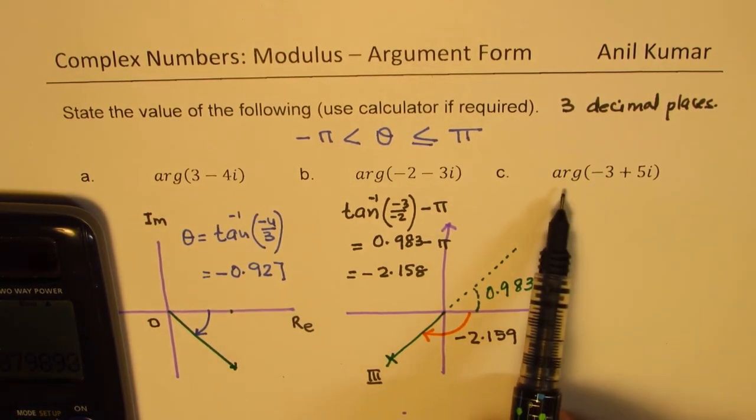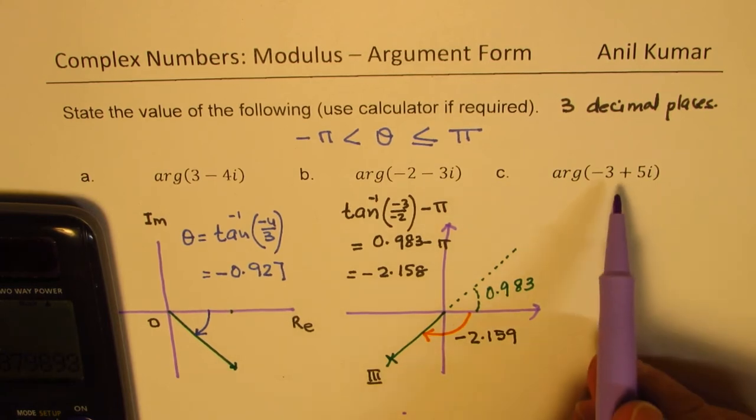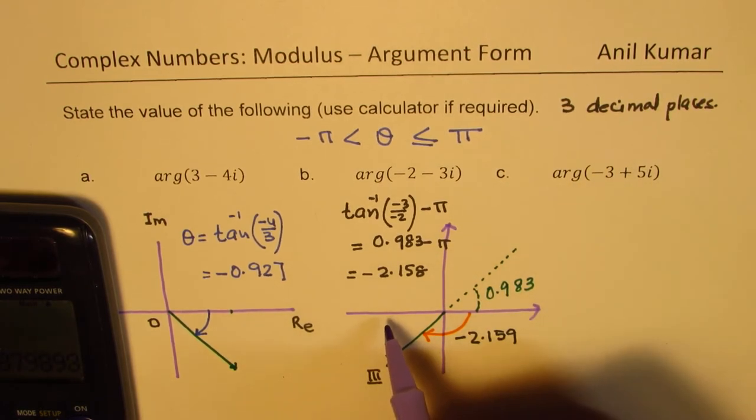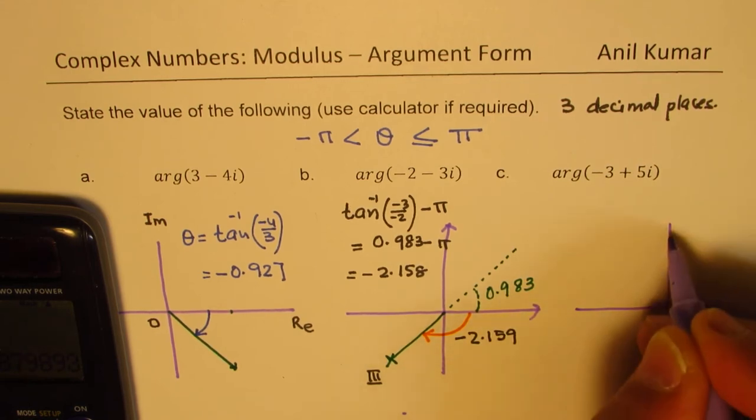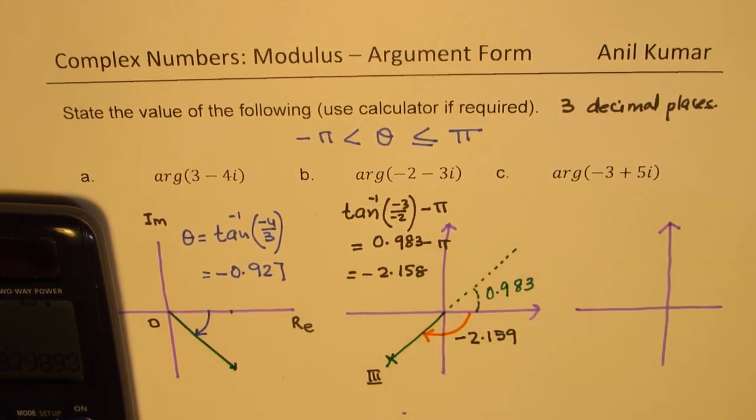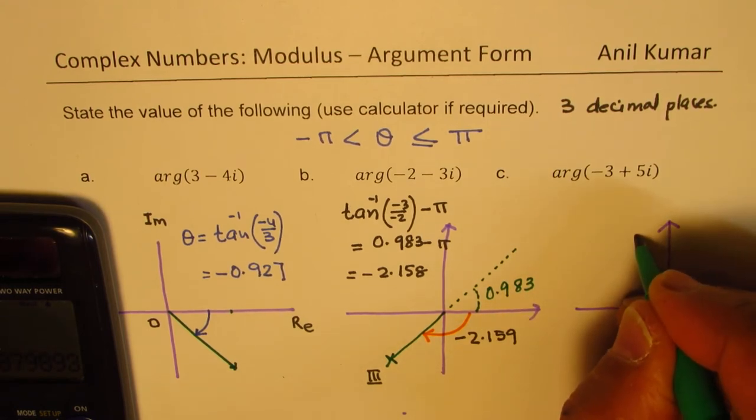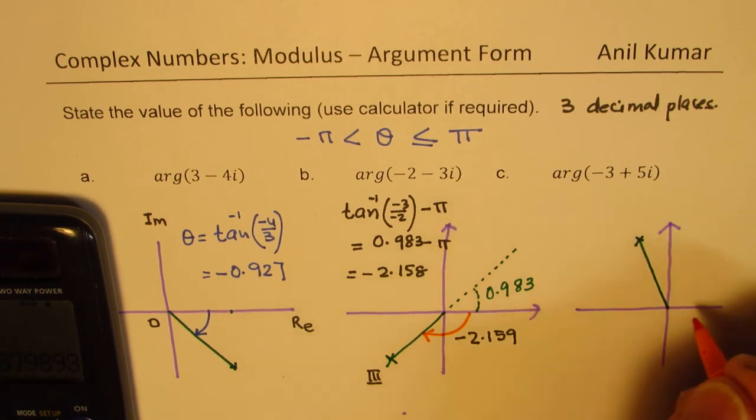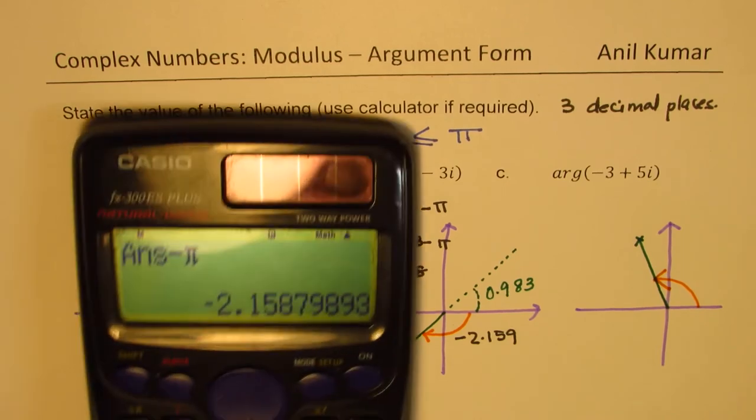Now, the next one here is argument minus 3 plus 5i. You can now pause the video, answer this question, and then look into my suggestions. So we are talking about now in quadrant 2. So let's sketch this here. Minus 3 plus 5i will be kind of here. So the angle which we are now looking into is this angle.